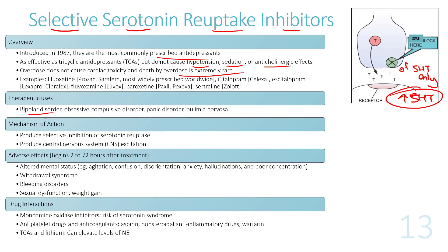Therapeutic uses of SSRIs include depression, bipolar disorders, panic disorders, and bulimia. They selectively inhibit serotonin reuptake, increasing serotonin levels in CNS synapses and causing CNS excitation. Adverse effects, which can begin 2 to 72 hours after treatment, relate to CNS excitation.